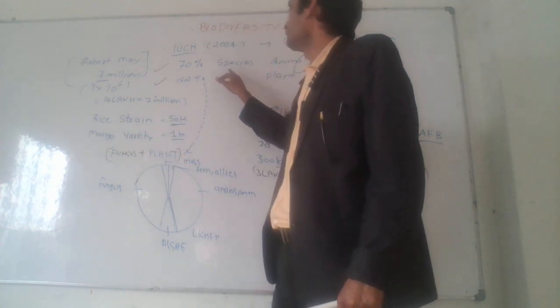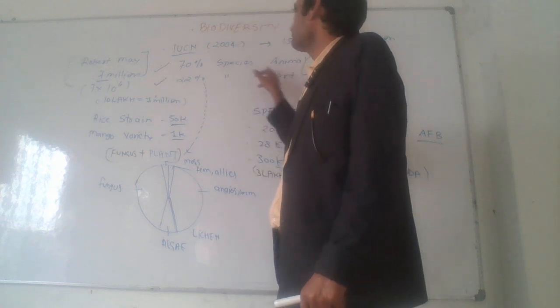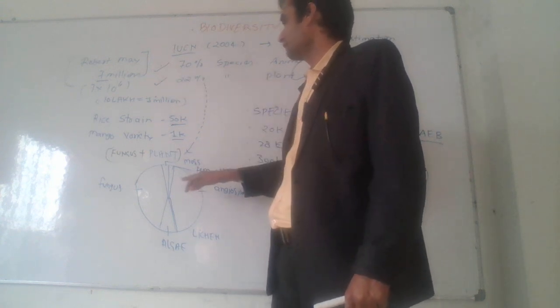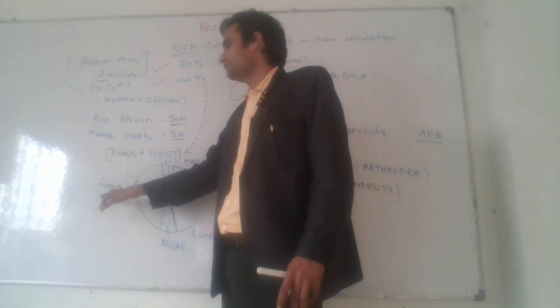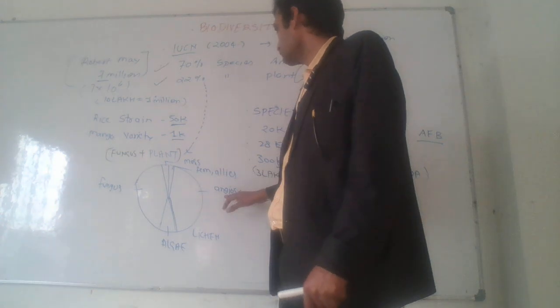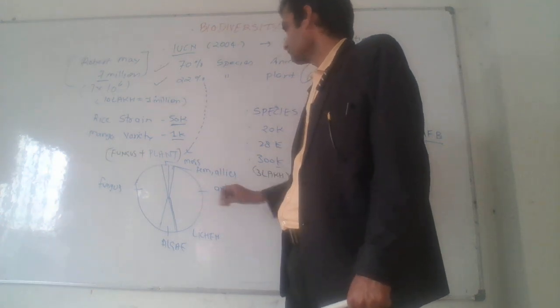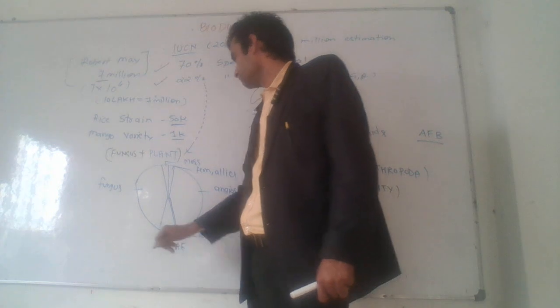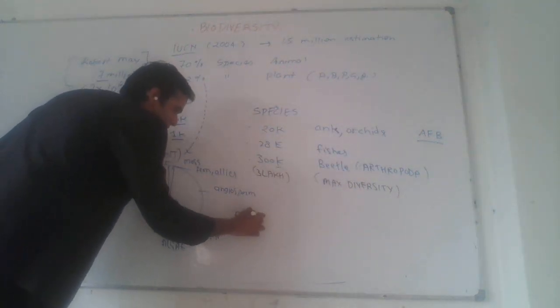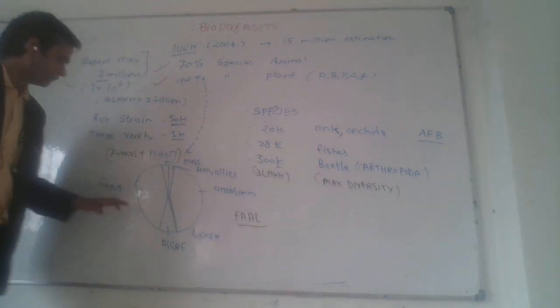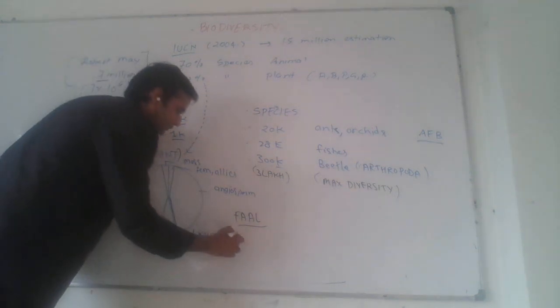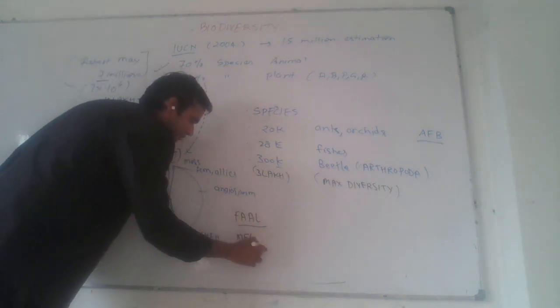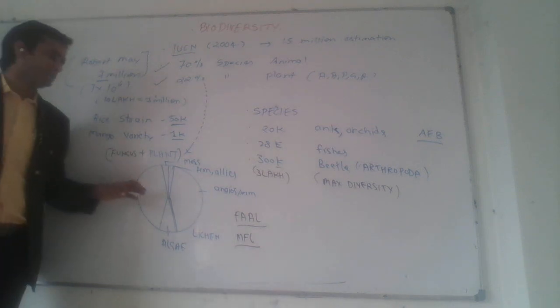Among plants, 22% are found on earth. Among plants, the major groups are fungi and angiosperms. Note that fungi are not technically plants, but are included in the plant community. Angiosperms are found in the maximum quantity, followed by algae, then moss, fern, and lichen. This is the decreasing order of species diversity found among plant-related groups.